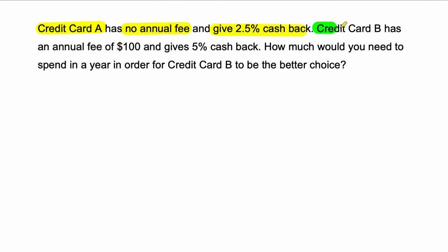But credit card B has an annual fee of $100, but it gives 5% cash back. So the question would be, which card is better for you? And the way you'd figure this out, one way at least, is to figure out how much would you need to spend in order for credit card B to be the better choice. And if you know you're going to spend that much, then it is a better card for you.